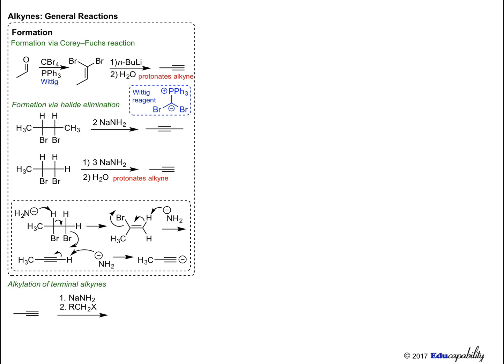The fact that alkynes can be deprotonated with strong base leads us to our first reaction of alkynes. A deprotonated alkyne, or acetylide anion, can be alkylated with a primary alkyl halide. It is important that the alkyl halide is primary, as the acetylide ion is a strong base and can cause elimination if reacted with hindered alkyl halides.